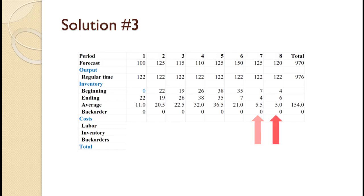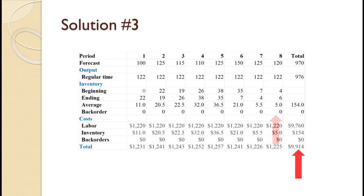For period 8, demand is 120 and production is 122 so inventory increases from 4 to 6 for an average of 5. For this last period, it would have been acceptable to produce only 116 so ending inventory would be zero. The total cost of this plan is $9,914. Of course, it would be slightly lower had we produced only 116 in the last period.